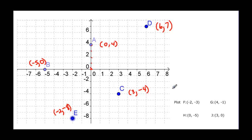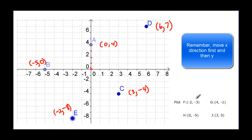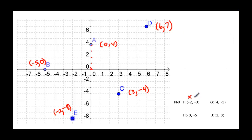Remember it's always x first and then y. Now let's try plotting points. For point F at (-2, -3): negative means left, so we go two units left in the x direction, then turn the corner and go down three in the y direction. For point G at (4, -1): we go across to four and then down one because it's negative one.